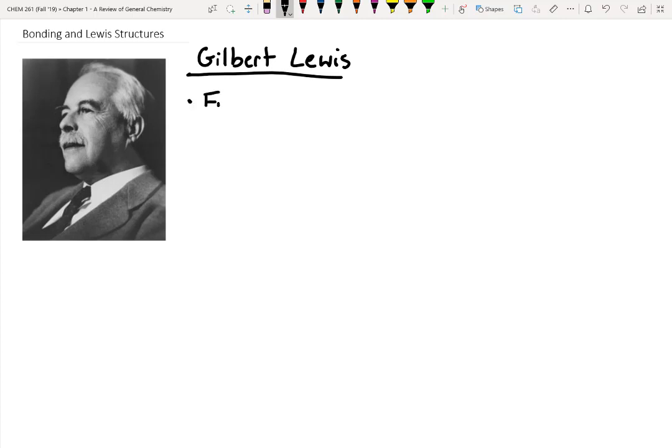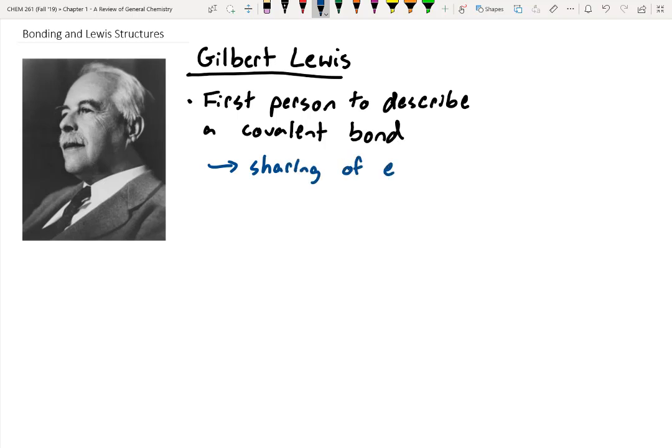Anyways, he's the first person to describe a covalent bond. So Langmuir really understood how important this was and Langmuir got most of the credit for bringing it forward to the greater scientific community. What is a covalent bond? That's when we share electrons, right? So it's a sharing of electrons, and I'm going to abbreviate electrons from here on out as just e minus, between two atoms.